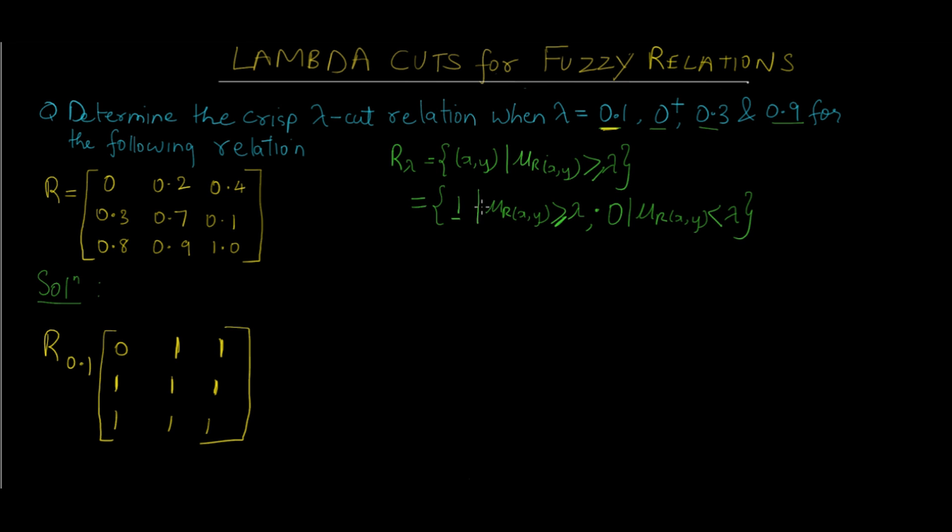Now let's see the second part. We have to calculate R₀₊. R₀₊ essentially means all the values that are greater than 0, excluding 0. Comparing the first one, we know 0 is not greater than 0, so only this part is replaced with 0. All the rest of the values—0.2, 0.4, 0.3, 0.7, 0.1—are all greater than 0, so all these values are replaced with 1. This is the final answer for the second part.